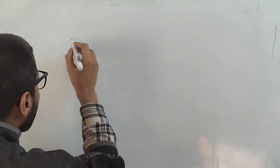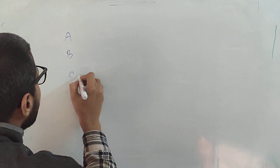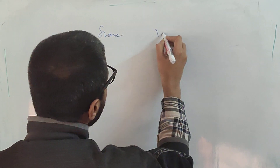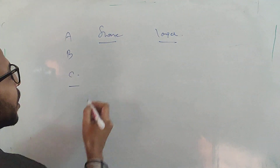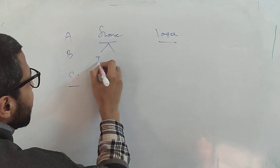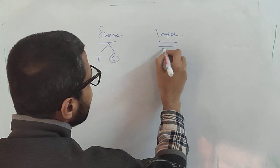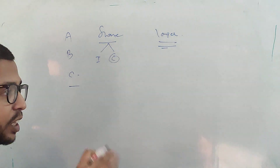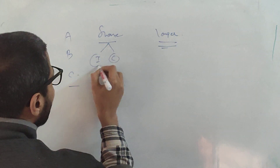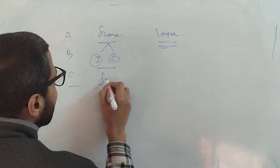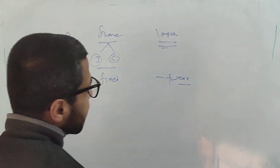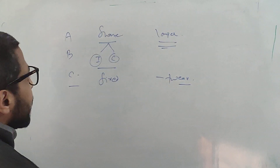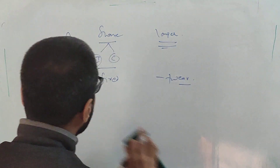To summarize: you learned about the three drug groups A, B, and C; the shorter course regimen with its intensive and continuation phases as a fixed regimen; and the longer course regimen where you can tweak drugs based on resistance pattern and side effect profile.